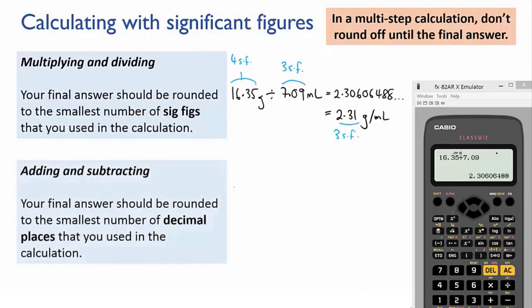Now when you're adding and subtracting, the rule is slightly different. Rather than looking for the number with the fewest sig figs, you're looking for the number with the fewest decimal places.